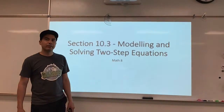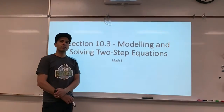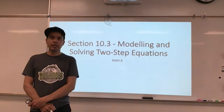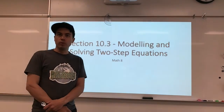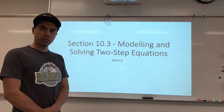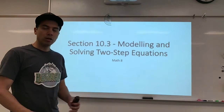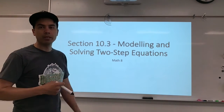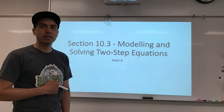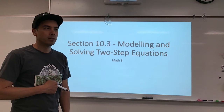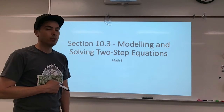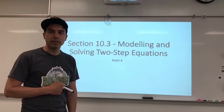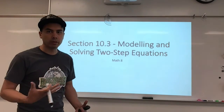Hey guys, just want to take a look at a different type of two-step equation today. The ones we looked at in our previous lesson had a variable being multiplied by some number; in this case it's going to be divided by some number. We're still going to use the same ideas: getting rid of the constant first and then isolating our variable.